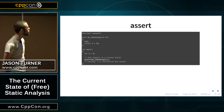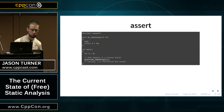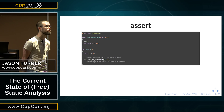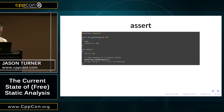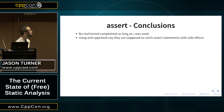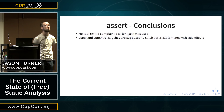And depending on your compiler, you might get a warning in a release build telling you that i is initialized but never used, but that's the only clue that you have that something's gone wrong. But if we actually use i, then we no longer get a warning. Of the tools I tested, none of them complained about this code,